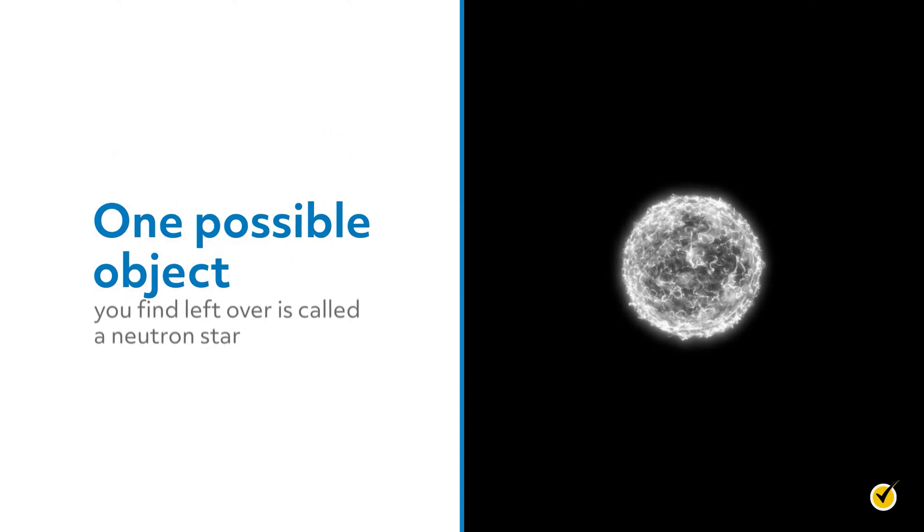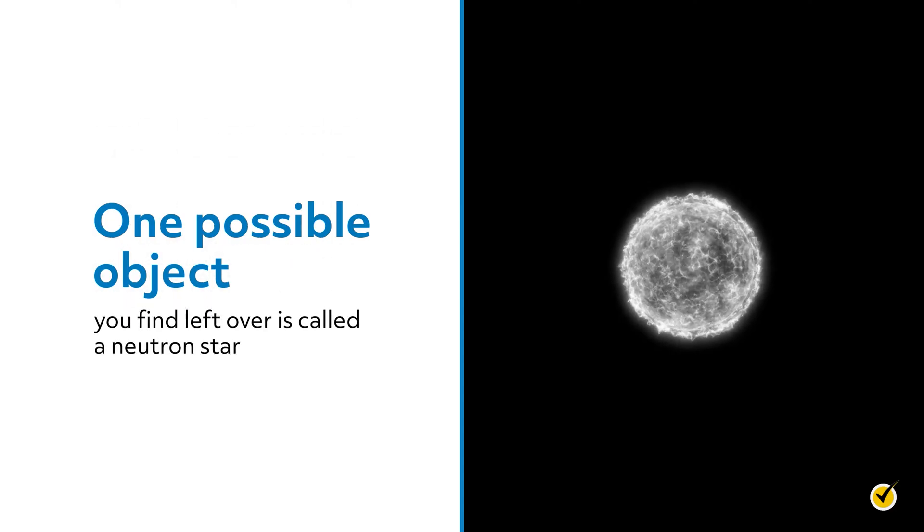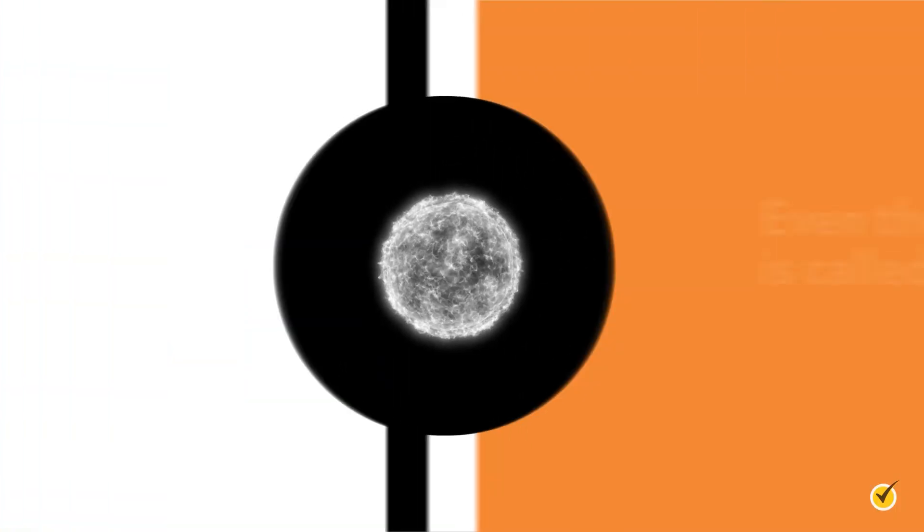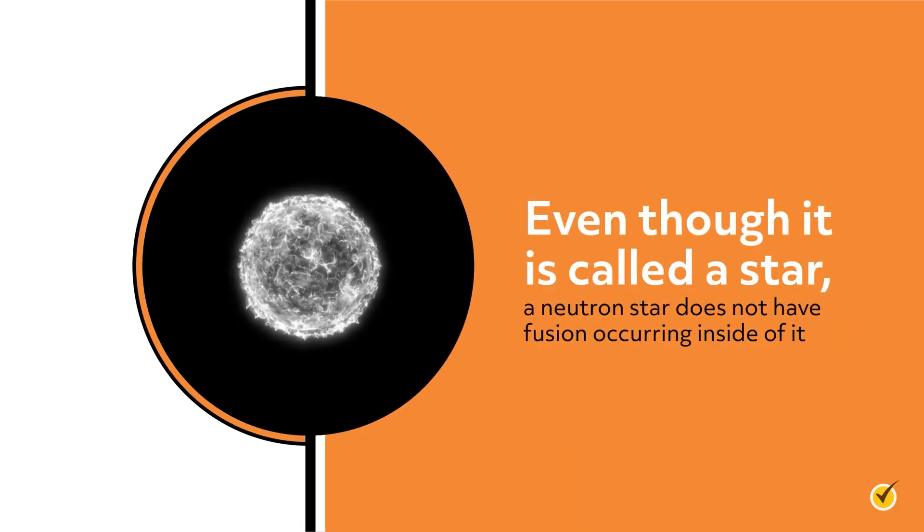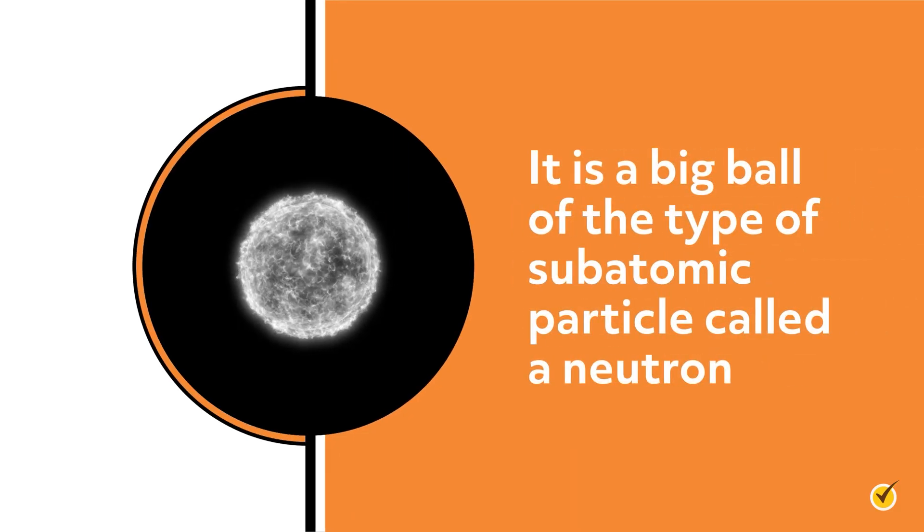One possible object you find left over is called a neutron star. Even though it's called a star, a neutron star does not have fusion occurring inside of it. Instead, it's a big ball of the type of subatomic particle called a neutron.